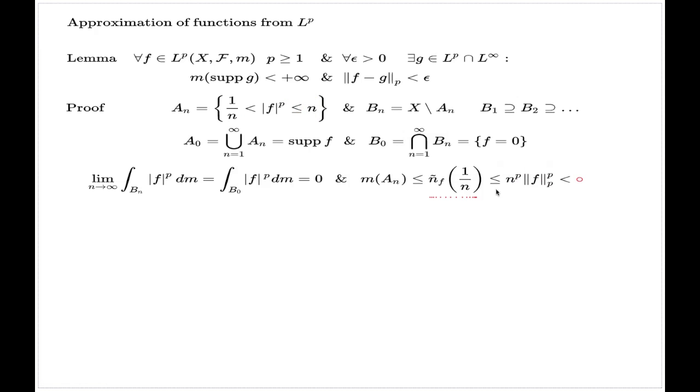Now via the Chebyshev inequality—that's why we use it—this is controlled by this number. Because my function comes from the p-summable class, this is a finite number, and that's why we have each of the subsets A_n of finite measure. That's the Chebyshev inequality which is used in this line of argument.